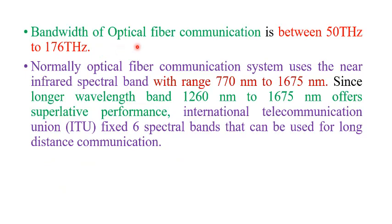The bandwidth of optical fiber communication is between 50 Terahertz to 176 Terahertz. If bandwidth increases, the information carrying capacity also increases. Optical fiber communication systems normally use the near infrared spectrum band with a range of 770 nm to 1675 nm. Since longer wavelength bands, 1260 nm to 1675 nm, offer amazing performance for long distance communication.